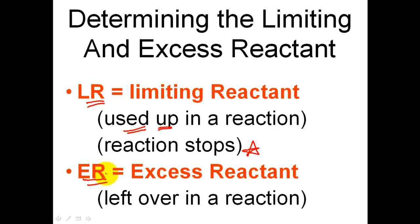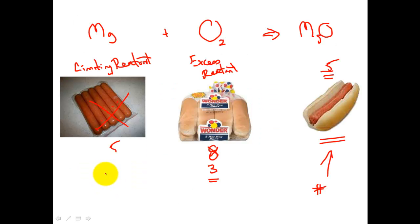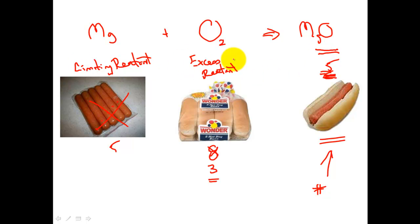Often, whether you're making something on the grill, breakfast, you name it, you often find like, oh my gosh, I have to run to the store because I don't have this, and that is going to limit what I can make. We're trying to find out what's the maximum I can make of something — in this case a chemical — and we're going to look at which one of my reactants is responsible for limiting it, in this case the five hot dogs.